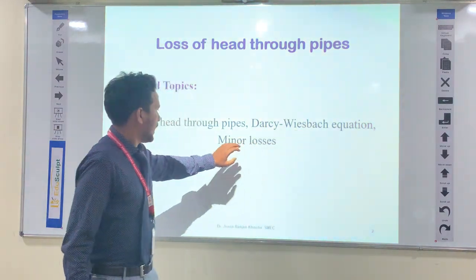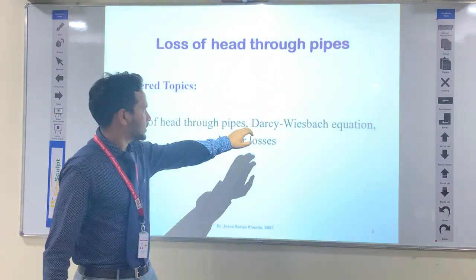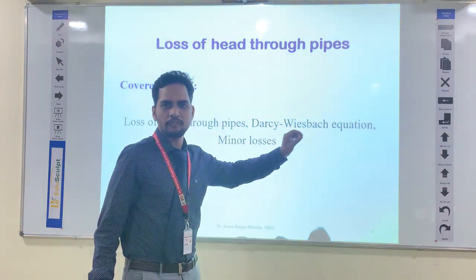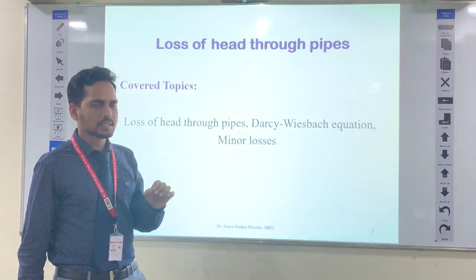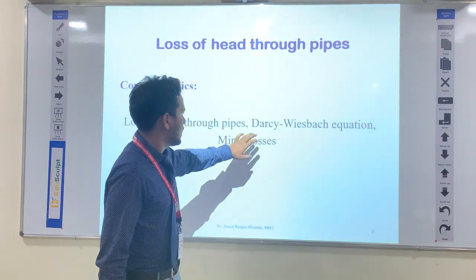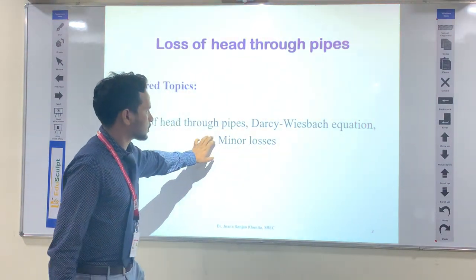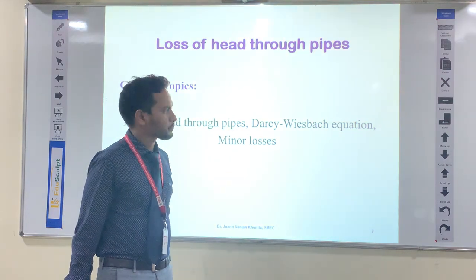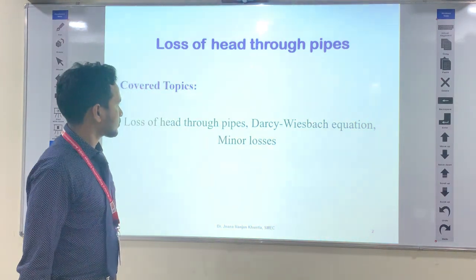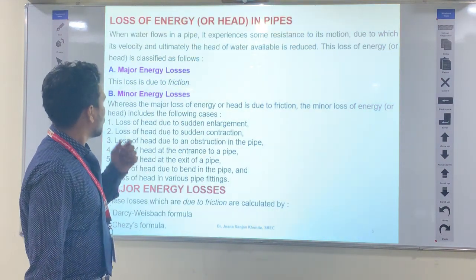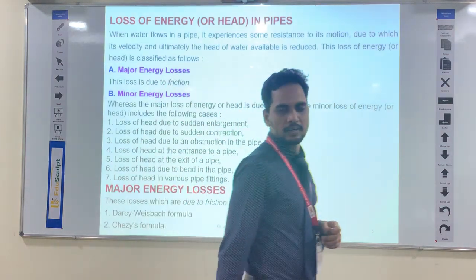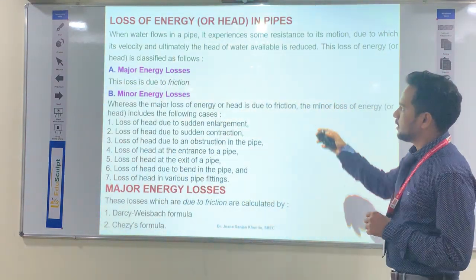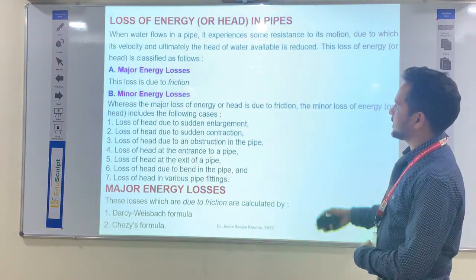Today we will discuss the Darcy-Weisbach equation and minor losses and major losses. Due to friction, that is the Darcy-Weisbach equation, and there are other losses — seven to eight losses — which are minor losses. First, let us see what are the losses of head in pipes.